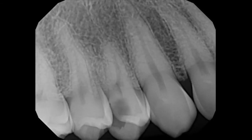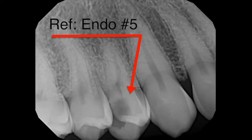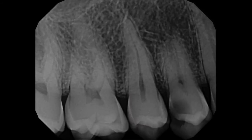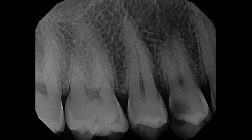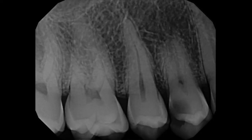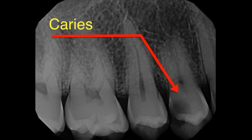This patient was referred to me for endodontic therapy in tooth number 12. The referral was based on the patient's chief complaint of thermal sensitivity and discomfort to cold, along with a radiograph that showed a large distal carious lesion approaching the pulp.